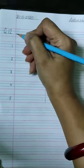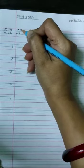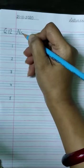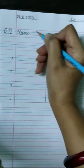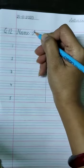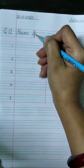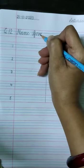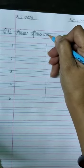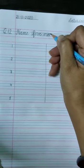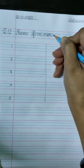Then write N-A-M-E, name, F-I-V-E, five, N-O-N, non. Then put a small dash.